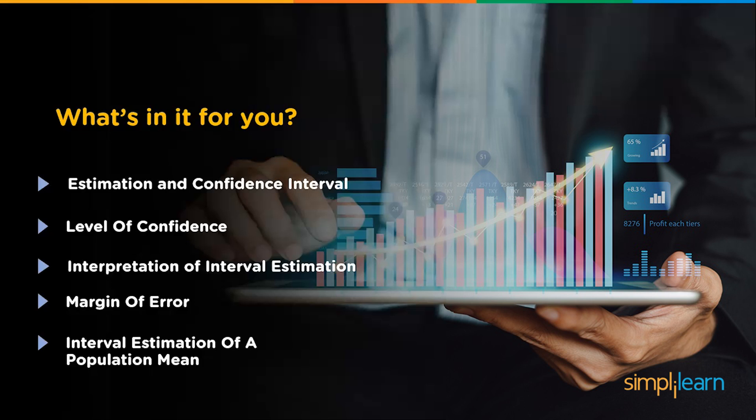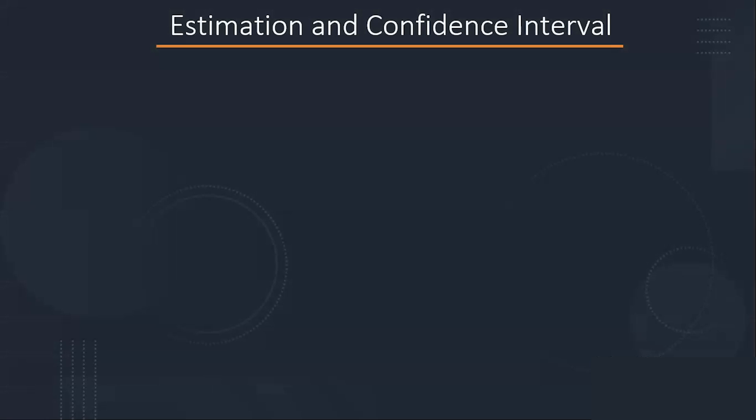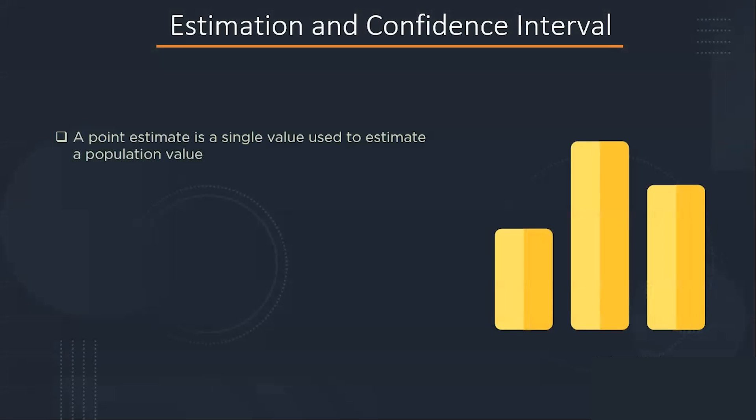So let's move further ahead. Estimation and confidence interval. Using descriptive and inferential statistics, you can make two types of estimates about the population: one is point estimate and other is interval estimate.